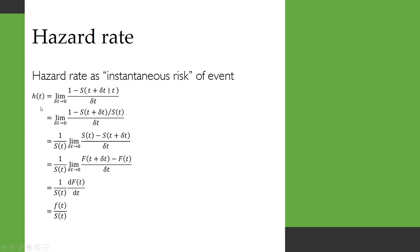So this hazard function h(t) is equal to 1 over S(t), the survival function, times the differential of the cumulative distribution function with respect to time. And that is just equal to the probability density function f. So finally, the hazard rate is equal to the probability density function divided by the survival function.